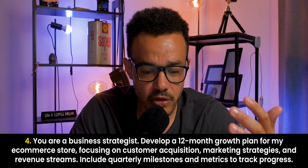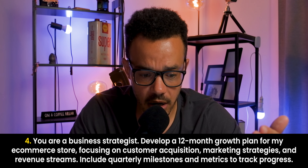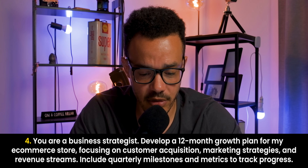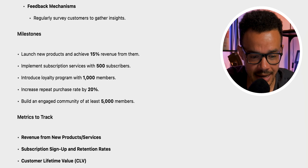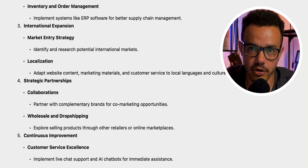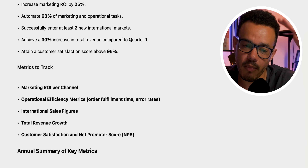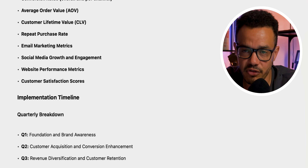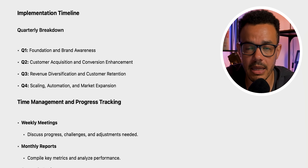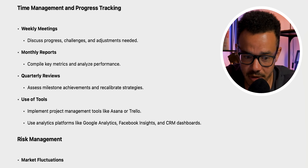Prompt number four is very interesting because it's effectively acting as a business strategist. This is an example of how ChatGPT O1 can operate as a team of business strategists working personally for you. The more detail you give it, the better it can do. The prompt: "You are a business strategist. Develop a 12-month growth plan for my e-commerce store focusing on customer acquisition, marketing strategies, and revenue streams. Include quarterly milestones and metrics to track progress." Think of this as having a whole team of business strategists working for you — you give it the detail, it works it all out, then gives you the answer.